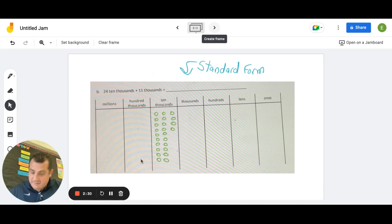And I have 11,000s. So I'm going to put in 1, 2, 3, 4, 5, 6, 7, 8, 9, 10, 11. There is my 11,000s. So now I'm going to see how can I, this is now written out and shown in unit form, how can I put this in standard form?